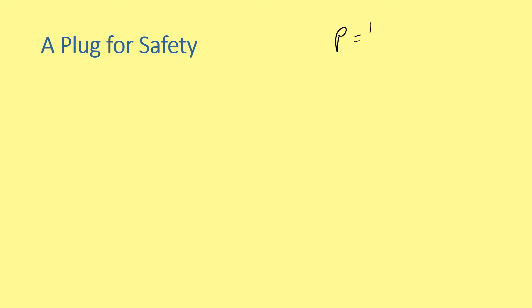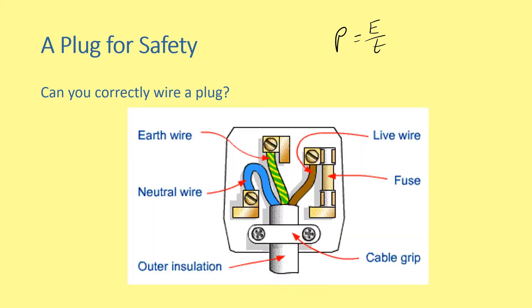When dealing with power, it generally goes hand in hand with safety. Power rating is a measurement of the energy consumed by the device every second: P equals E over T. Can you correctly wire a plug? A mains plug normally contains three wires: the earth wire, the neutral wire, and the live wire. The live wire, which is attached to the fuse, is brown.